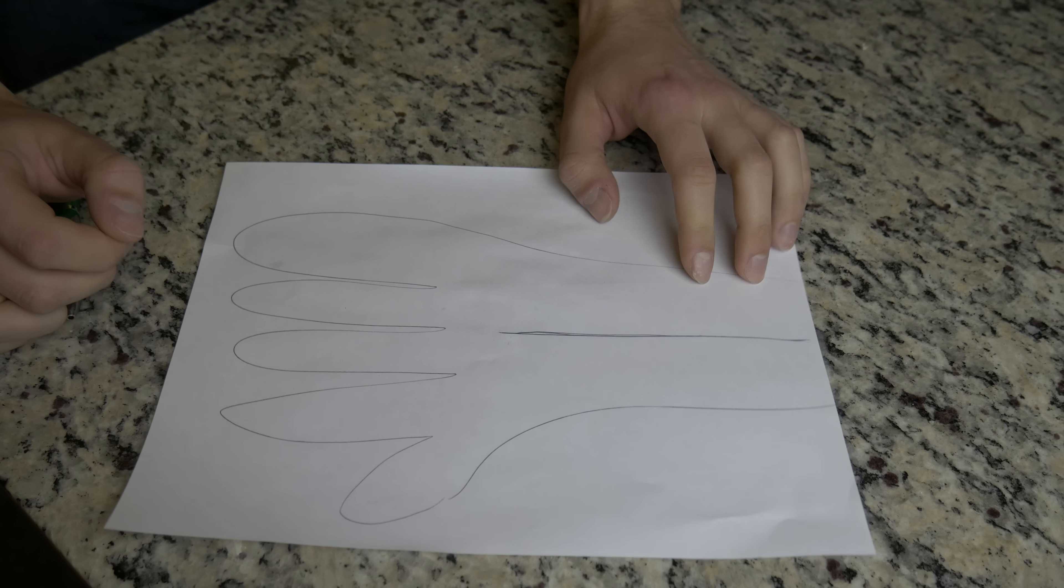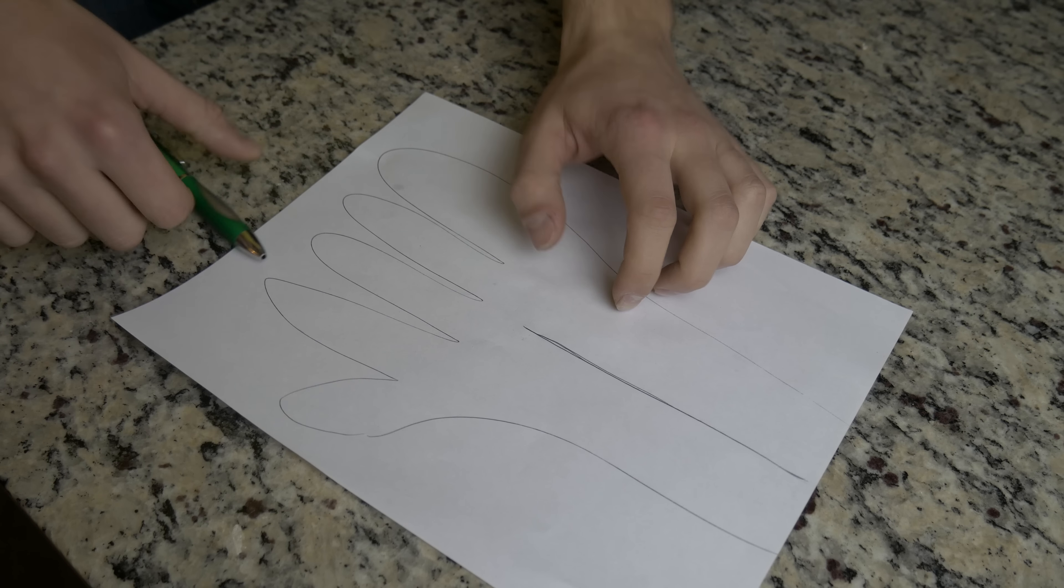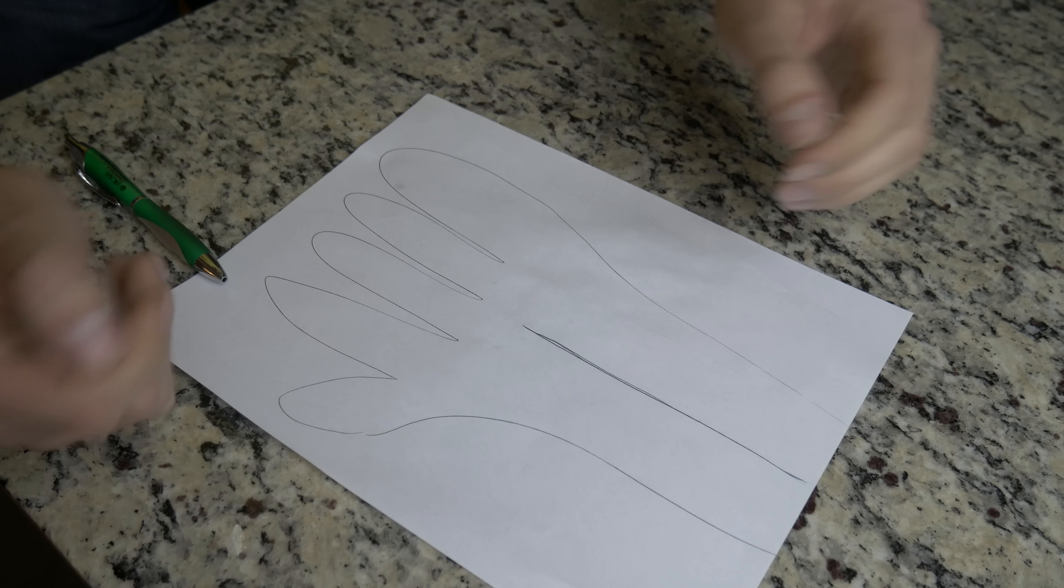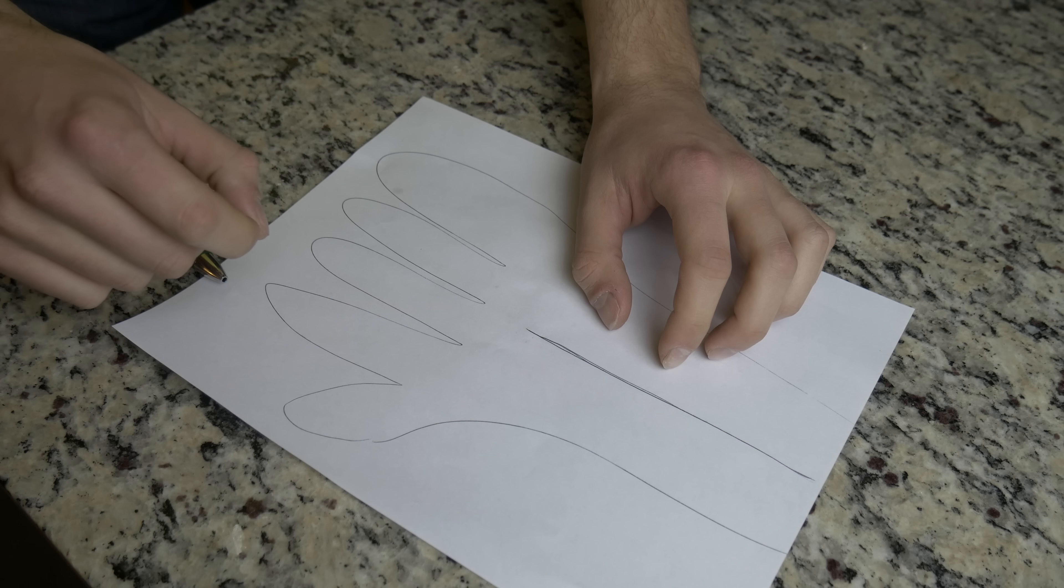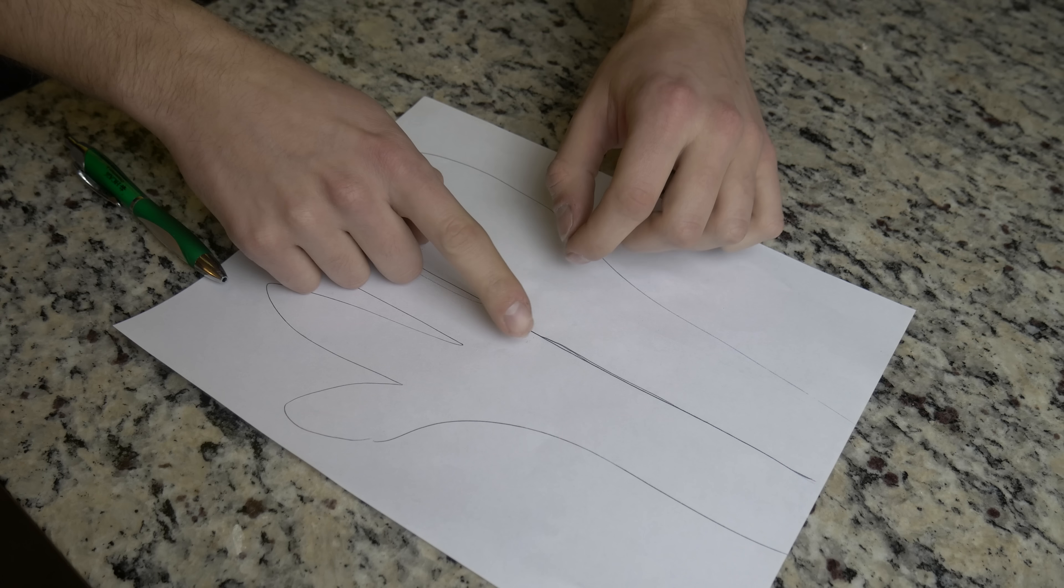So here's my hand, here's my arm. This line in the middle here, that's going to be the vein. Let's say you put your tourniquet on up here if you need one at all.